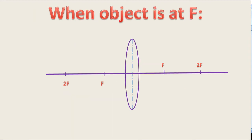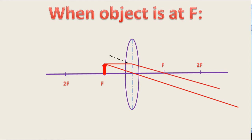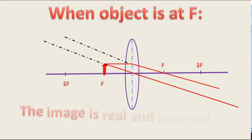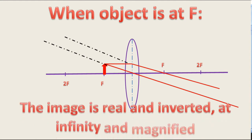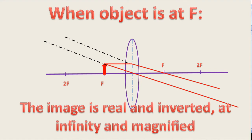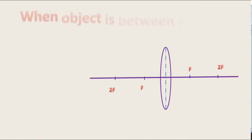When the object is at F, the rays of light coming from the object pass through the lens and converge at infinity — that is, the rays emerge as a parallel beam. The image is real and inverted, formed at infinity, and it is magnified.